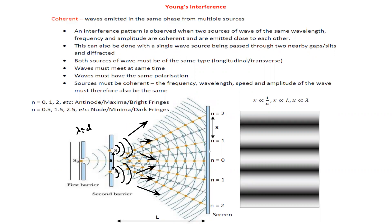Their interference leads to a combination of bright and dark regions. A bright region means constructive interference — the two waves increase the effect of each other. A dark region means the two waves cancel out the effect of each other.